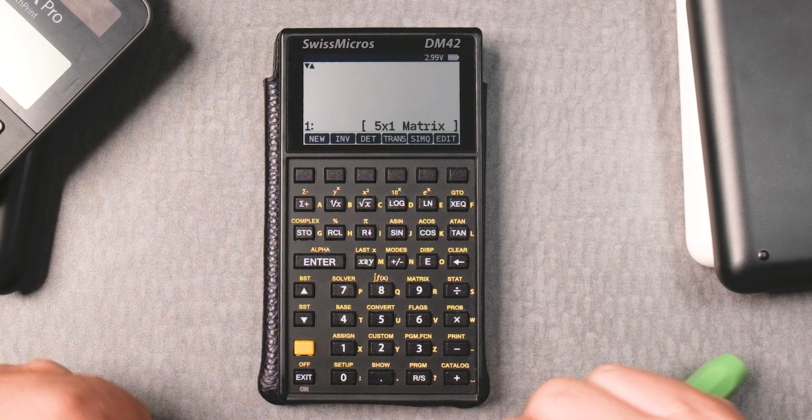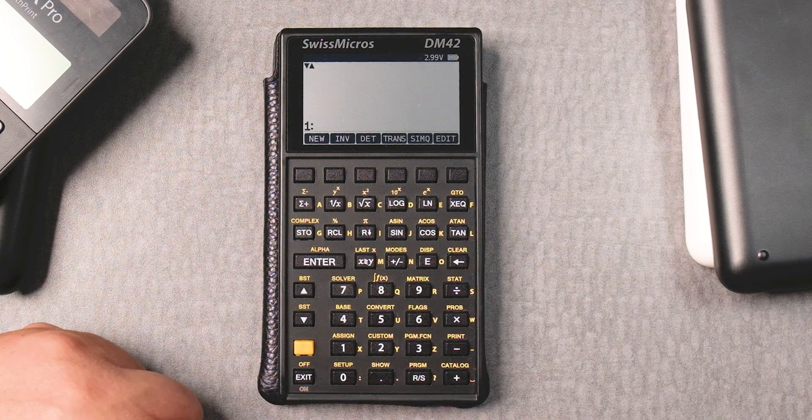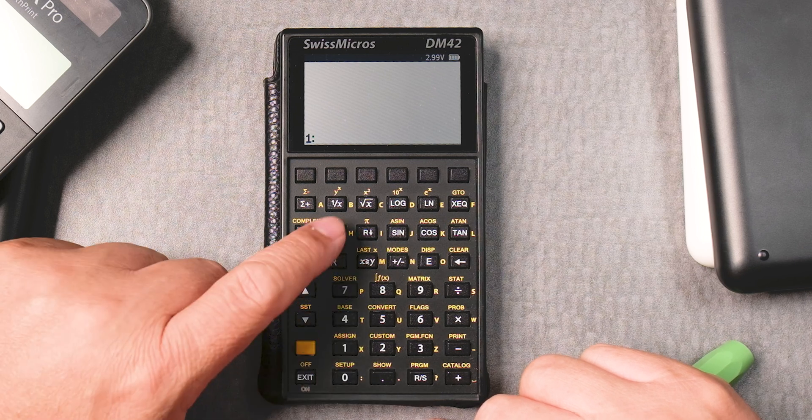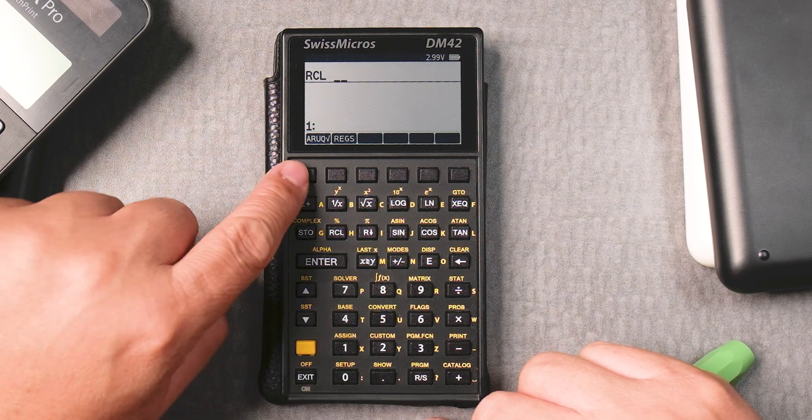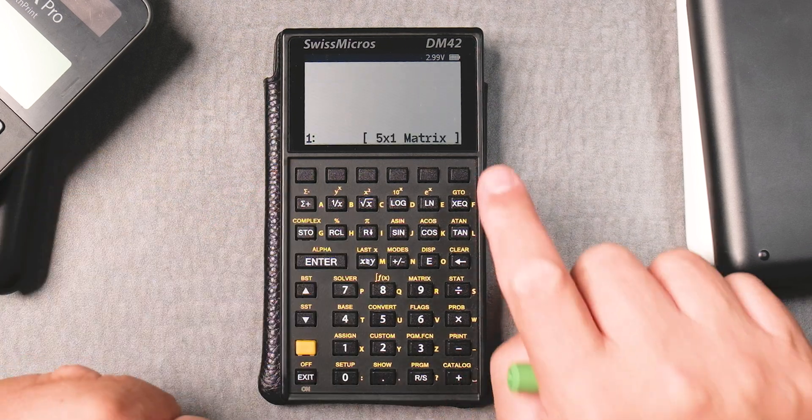I'm going to press exit, I'm going to delete this. So now what you can do is press recall and you press this function button and there's your matrix.